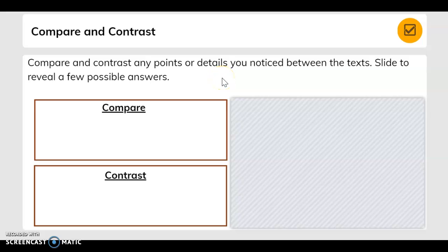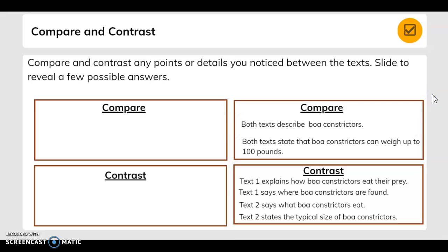Compare and contrast any points or details you notice between the texts. Slide to reveal a few possible answers. Compare: both texts describe boa constrictors. Both texts state that boa constrictors can weigh up to 100 pounds.